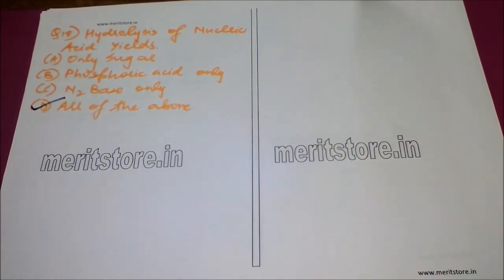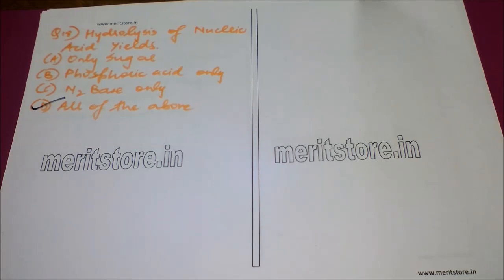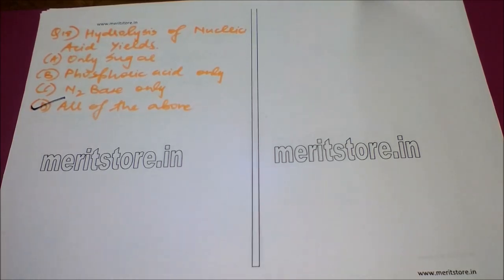Our next question is: hydrolysis of nucleic acid yields — Option A: only sugar, Option B: phosphoric acid only, Option C: nitrogen base only, Option D: all of the above. The correct answer is Option D: all of the above, because nucleic acid is known to be made of sugar, phosphoric acid, and nitrogen bases. For example, in DNA or RNA, the sugar is deoxyribose or ribose, along with phosphoric acid and nitrogen bases in the form of purines and pyrimidines.